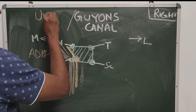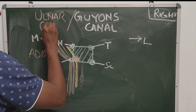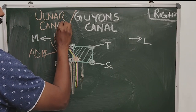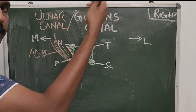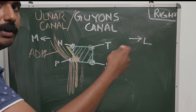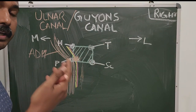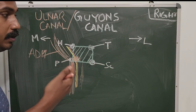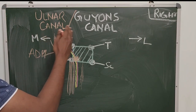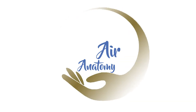Guyon's canal has another name — it is also called the ulnar canal. Note that it is not the ulnar tunnel; the ulnar tunnel is located at the elbow, which is the more common site for ulnar nerve compression. These are all potential sites of nerve entrapment or tunnel syndromes. This is the ulnar canal, or Guyon's canal. Thank you so much.